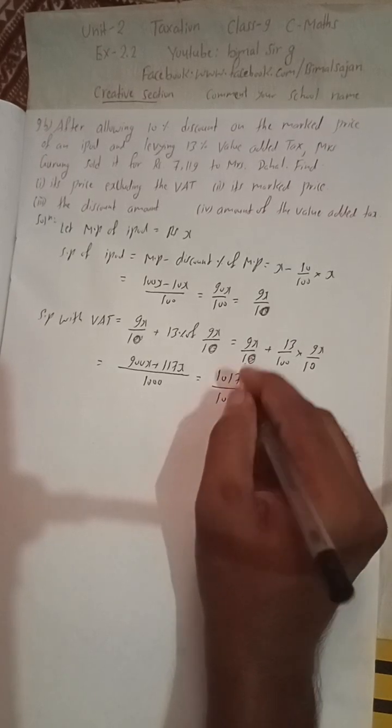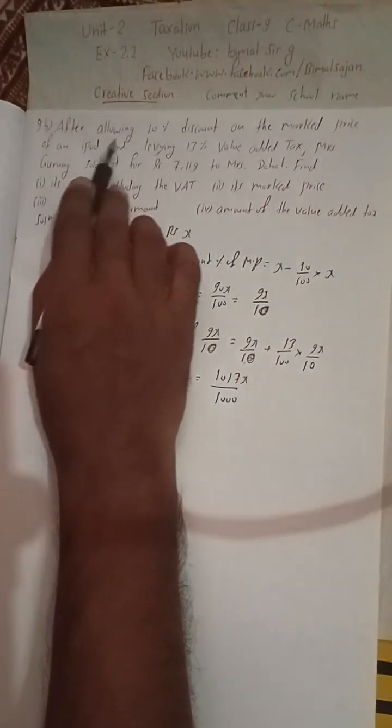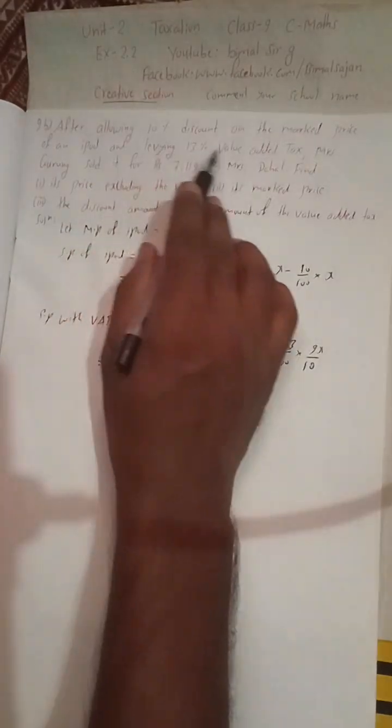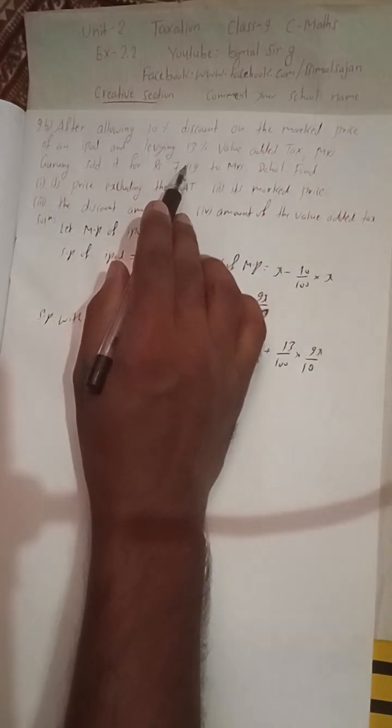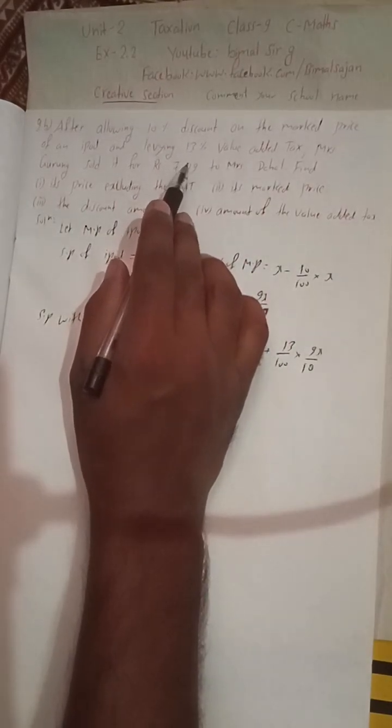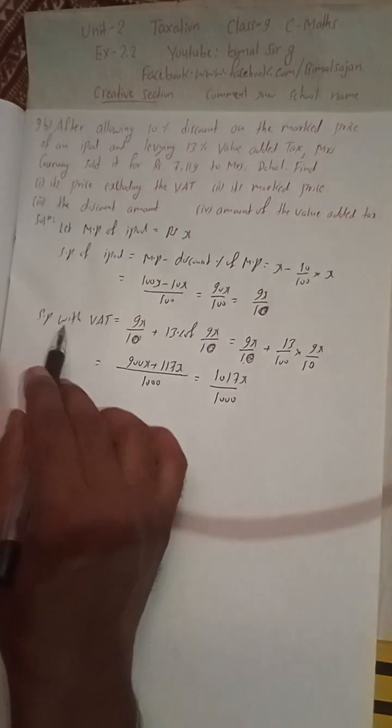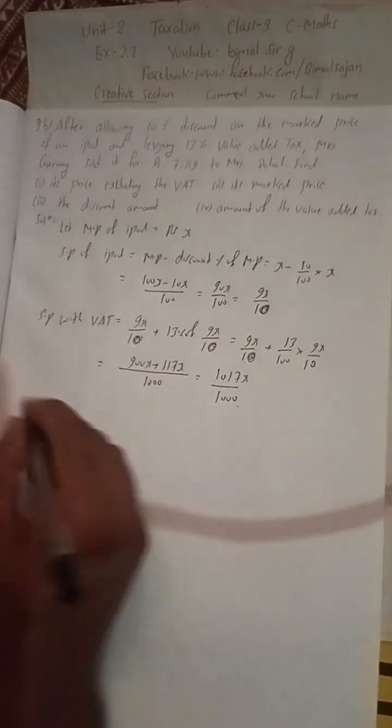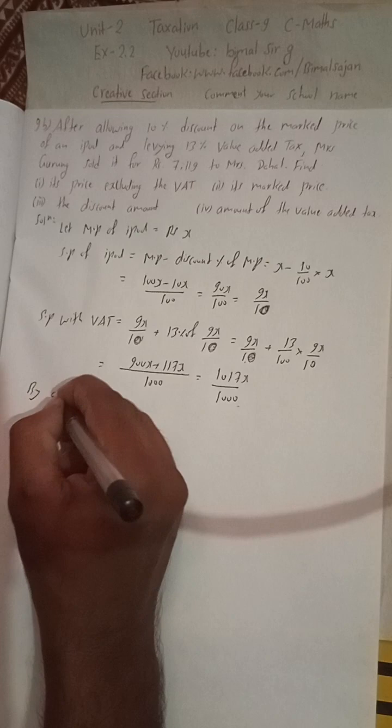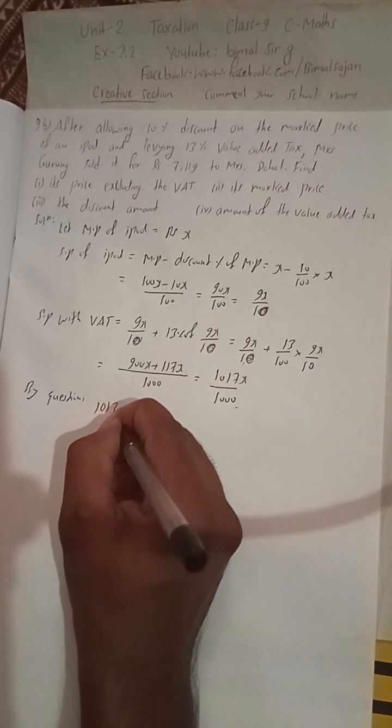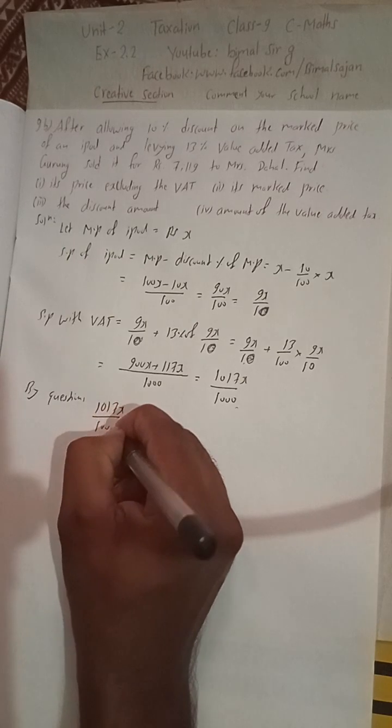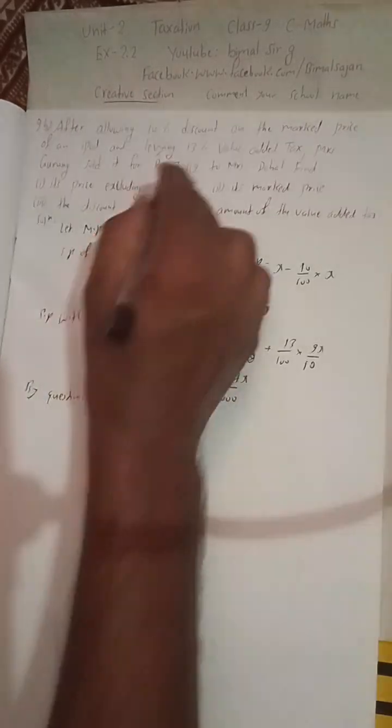By the question, after allowing this much discount on the marked price and adding 13 percent VAT, Mrs. Gurum sold it for this much. So by question, 1017x by 1000 is equal to the SP with VAT, which is 7119.